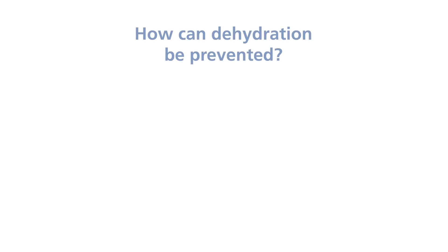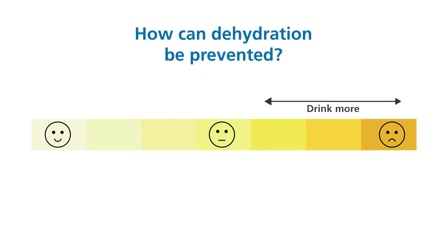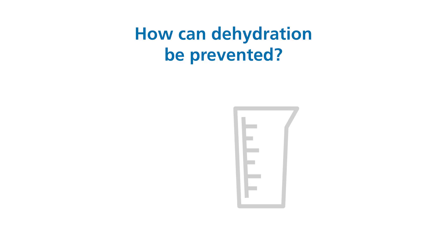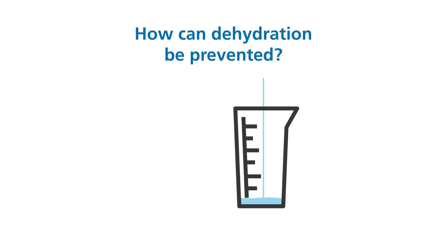How can dehydration be prevented? Adults should drink enough fluid to keep the urine colour pale and avoid feeling thirsty. This is around 1.5 to 2 litres per day, unless they have been advised to restrict their fluid intake.